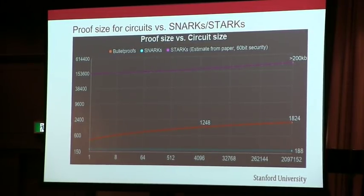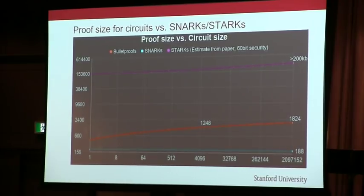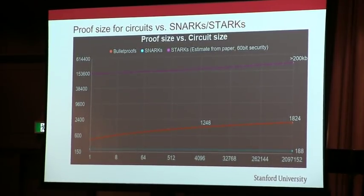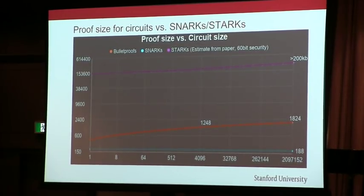In terms of proof size, we have short proofs, but they're not as short as SNARKs. SNARKs are 188 bytes, and Bulletproofs are logarithmic — you'll be hard-pressed to find a circuit where you get over 2 kilobytes, but they're not quite as short as SNARKs.